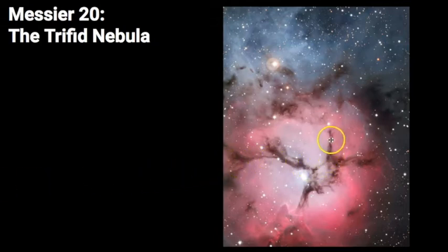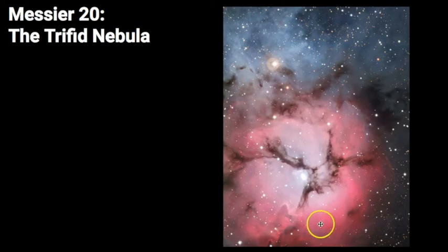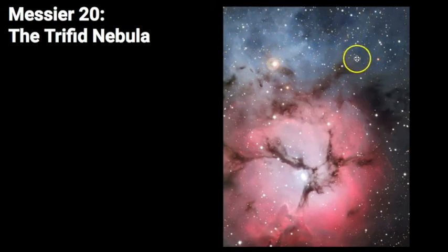In the Trifid Nebula, the dark portions are considered absorption nebulae or dark nebulae, the pink areas throughout are considered an emission nebula, and the bluish area at the top is a reflection nebula. The fact that all three types are combined into one object is remarkable and attracts many types of astronomers, since you can see all three diffuse nebula types in a single astronomical object.